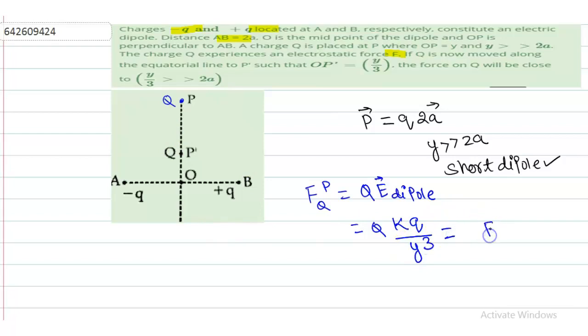This is equation one. Now in the second part, it says that now this becomes P'. So now I'm writing force on Q at point P' will be again Q times electric field at P'.